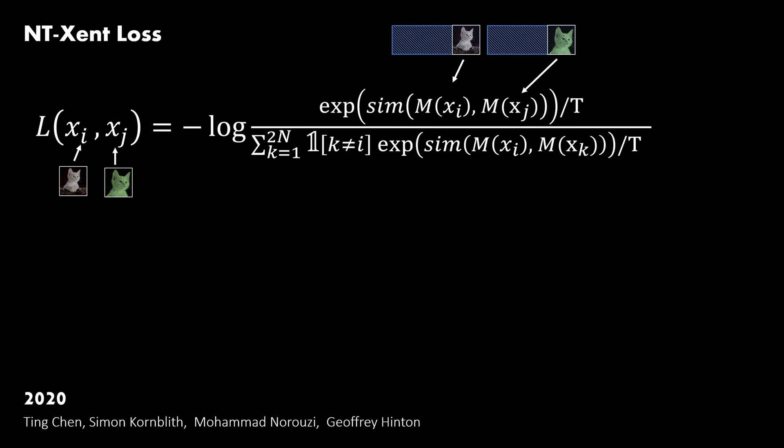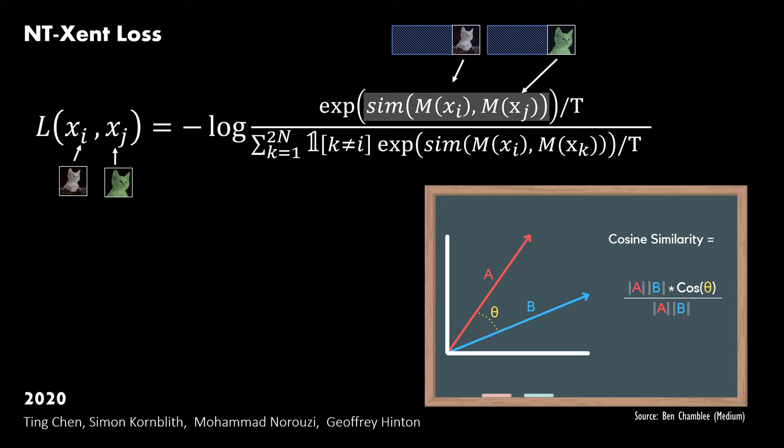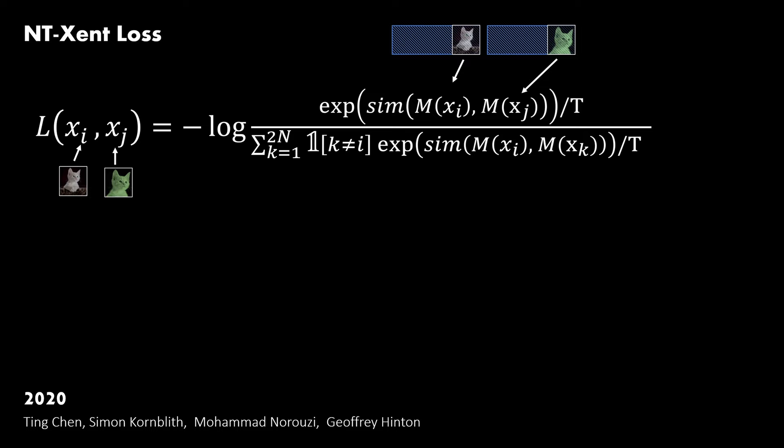NT-Xent uses the cosine similarity as similarity measure between the two vectors of the positive pair. The new part is that we also calculate the similarity with xi for all other pairs in the batch. That's this section in the denominator. Let's visualize this.